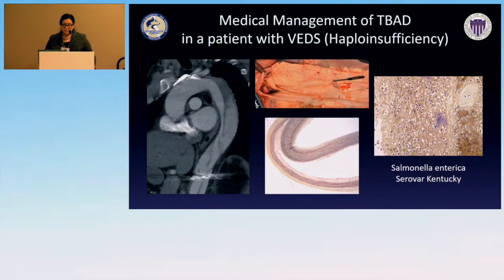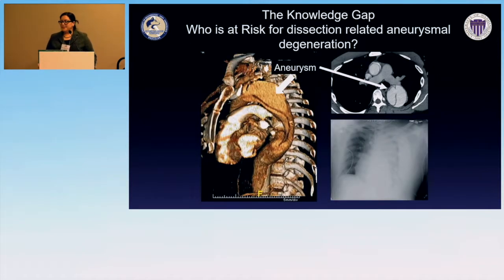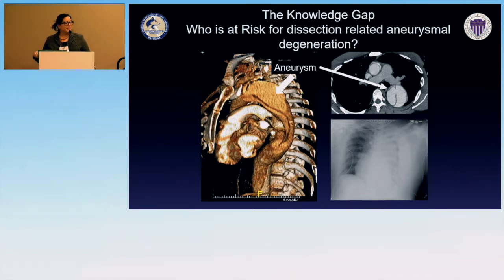Sometimes medical management doesn't work. Here's a patient with a haploinsufficiency mutation in Col3A1 — vascular EDS — who had a type B dissection, traveled to India, developed enteric symptoms, seeded his aorta with salmonella, and unfortunately ruptured. The other big knowledge gap is predicting who will stabilize with medical management versus who will continue to degenerate. This Marfan patient with an enlarged aorta ruptured the night of admission and died — a pivotal point in my training career.